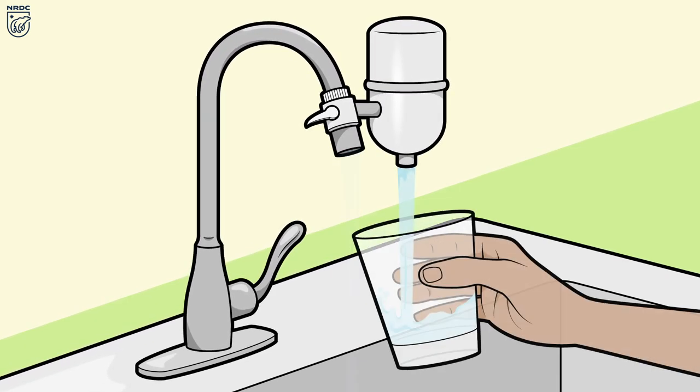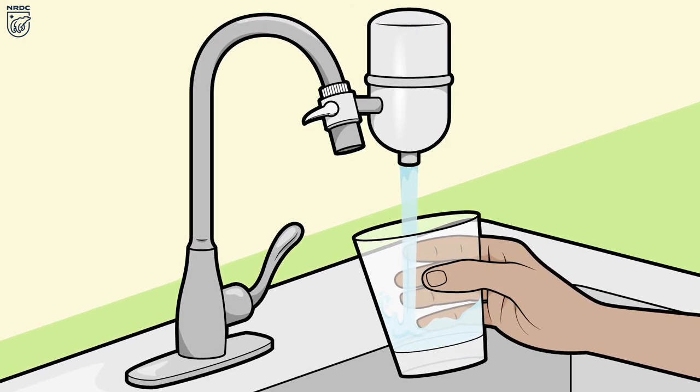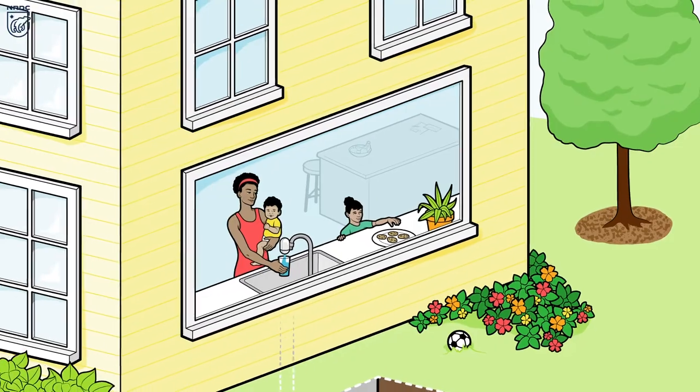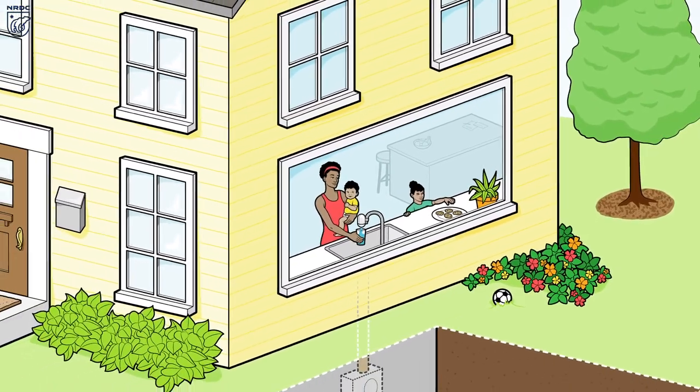Also, continue to use a water filter certified to remove lead or bottled water for drinking and cooking. Get your water tested regularly, but in the end, it is most important to have all of the lead pipes removed from your house.